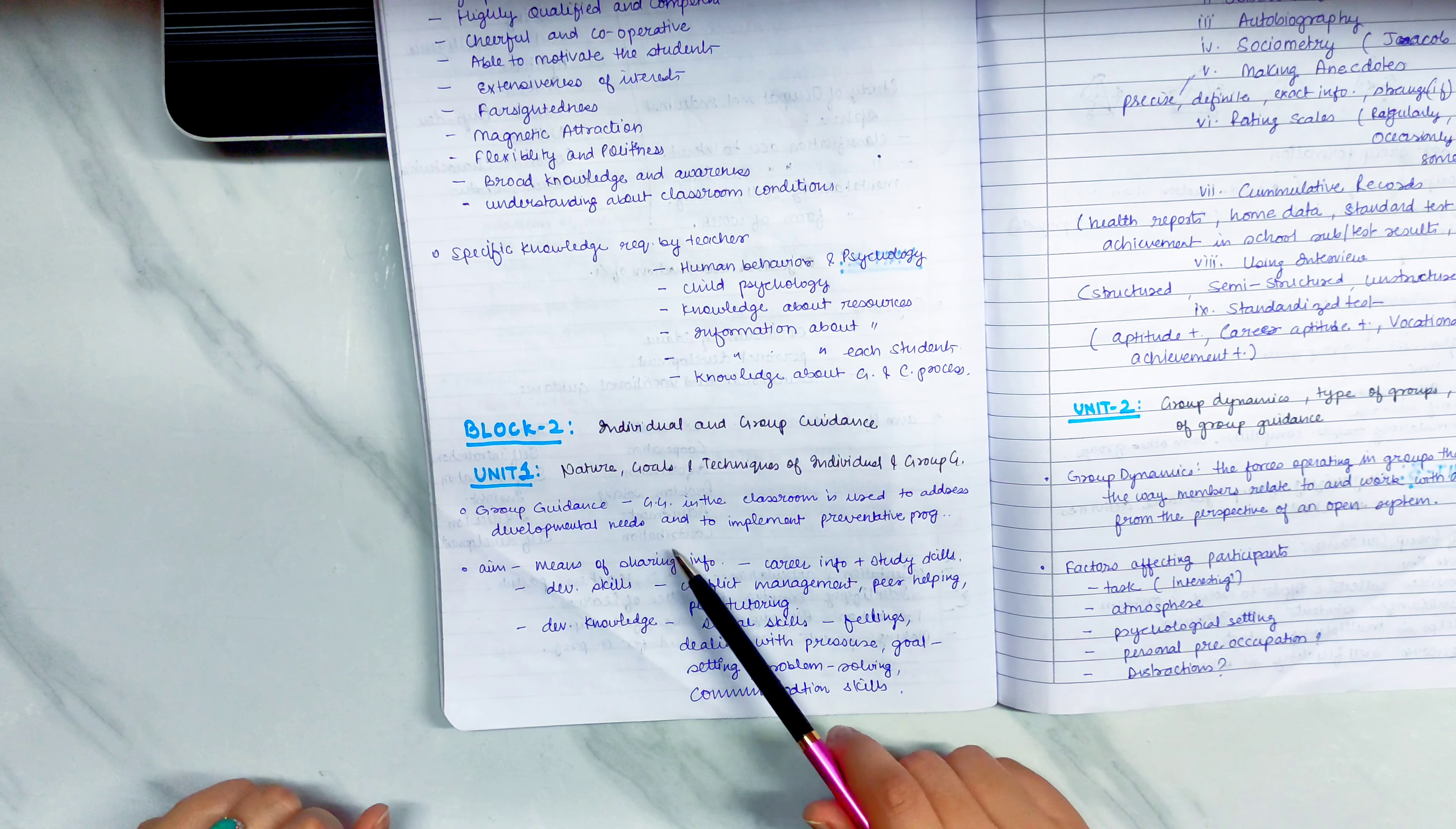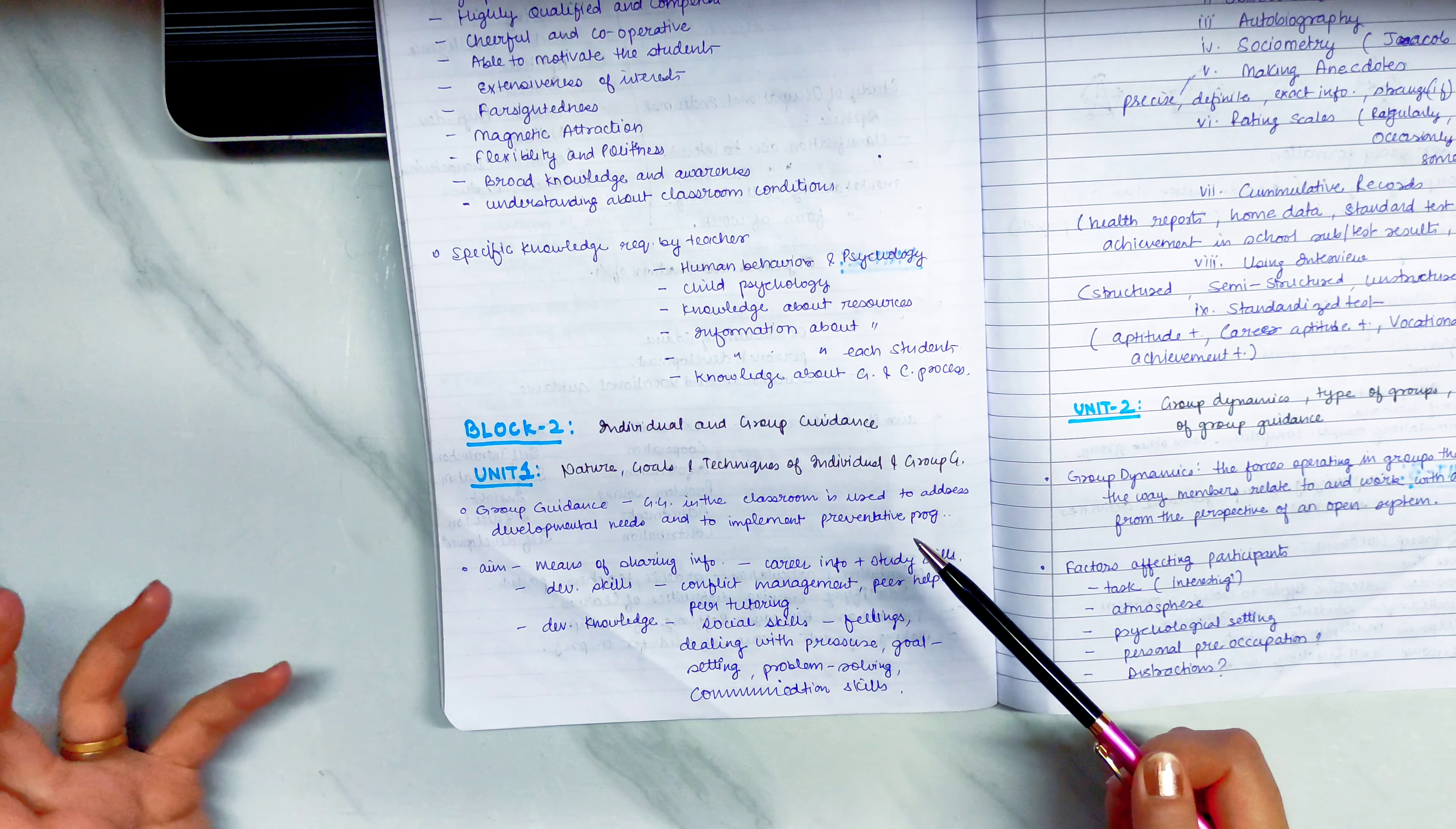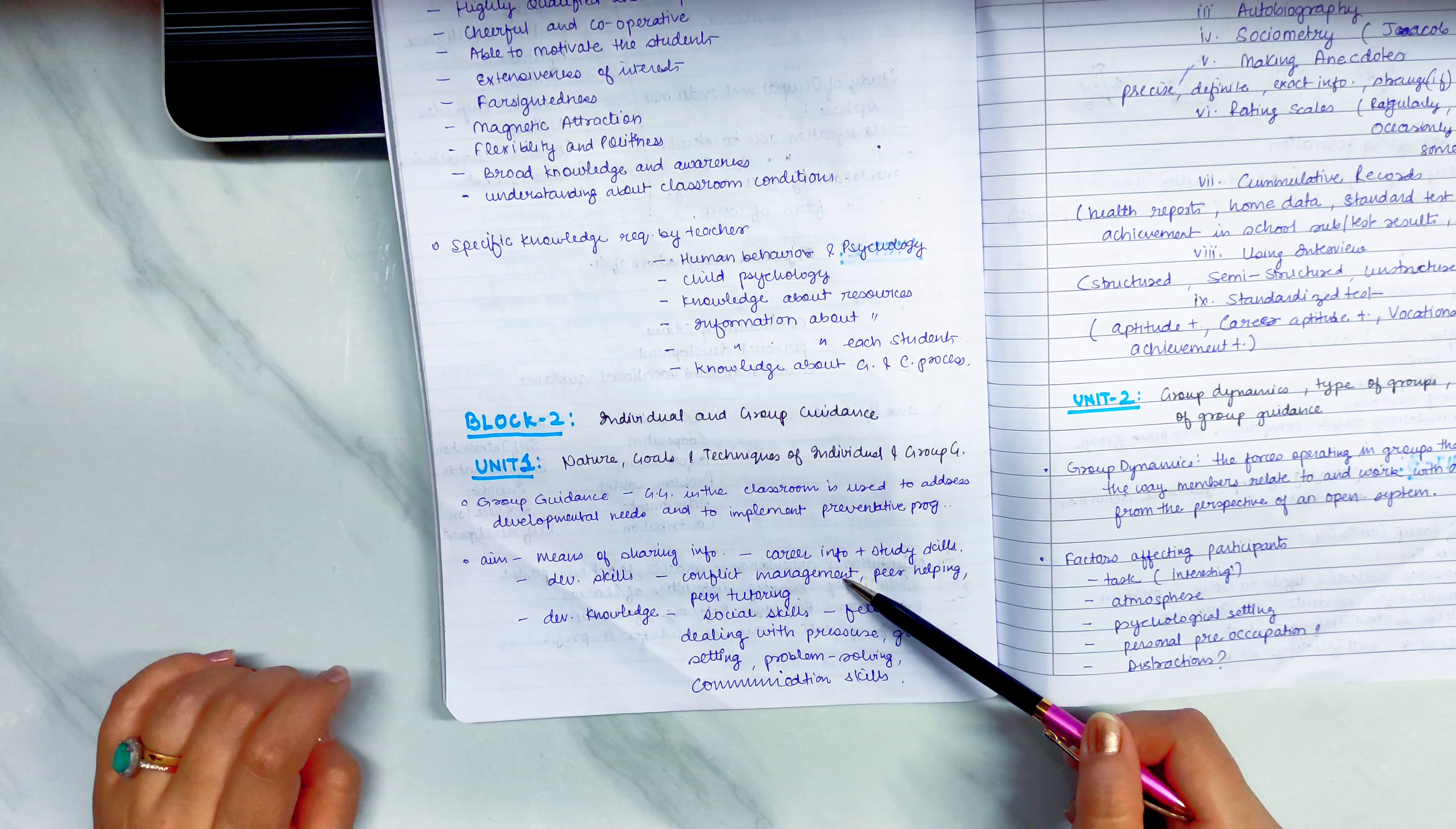Group Guidance in the classroom is used to address developmental needs and to implement preventive programs. So basically, you guide a group of individuals in group guidance. What is the aim? It is used as a means of sharing info, career related info, study related skills, developmental skills, conflict management.